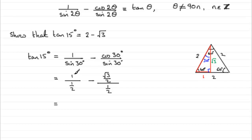So 1 divided by a half is 2. And in this fraction, if you were to multiply top and bottom by 2, you'd end up with minus root 3 over 1, which is just simply root 3. And so you have it. There you go. We've proved that it is equal to 2 minus root 3.